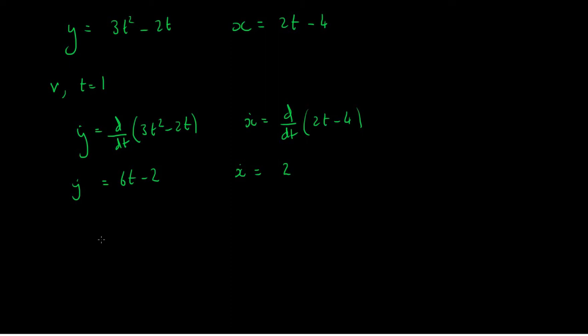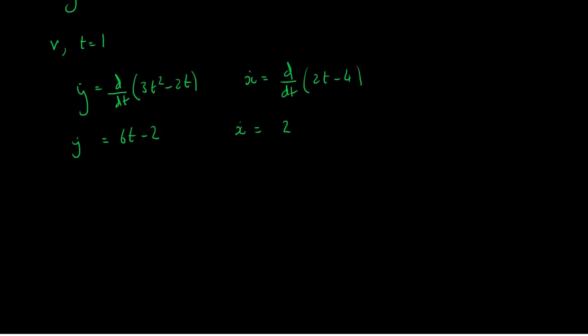Okay, so now if we substitute our value of t into here, we end up with y-dot when t is equal to 1 is equal to 6 times 1 minus 2. And as the speed is not a function of velocity, we have a constant velocity in the x-direction, x-dot is just equal to 2.